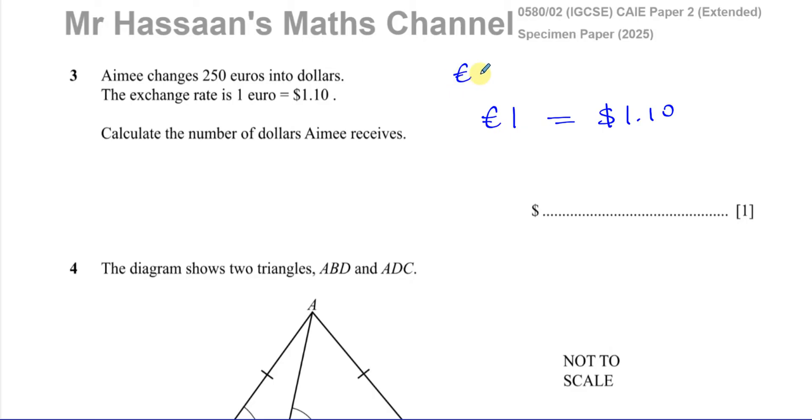So we're going to have 250 over here is equal to X dollars. Now we can do a simple cross multiplication here. I can just multiply 250 by 1.10 and divide it by 1. So the X that we're trying to find, the number of dollars, is going to be 250 multiplied by 1.10. We don't have to put the zero at the end here.